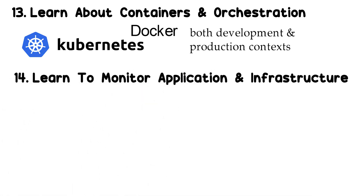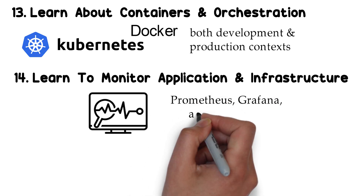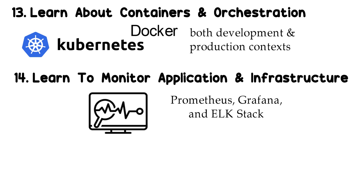Step 14: Learn how to monitor application and infrastructure. An application that has been deployed in production, as well as the infrastructure that supports it, should be monitored — that's why monitoring and alerting is one of the most critical abilities in a DevOps engineer's skill set. To get started, you can use open source tools such as Prometheus, Grafana, and the ELK Stack.